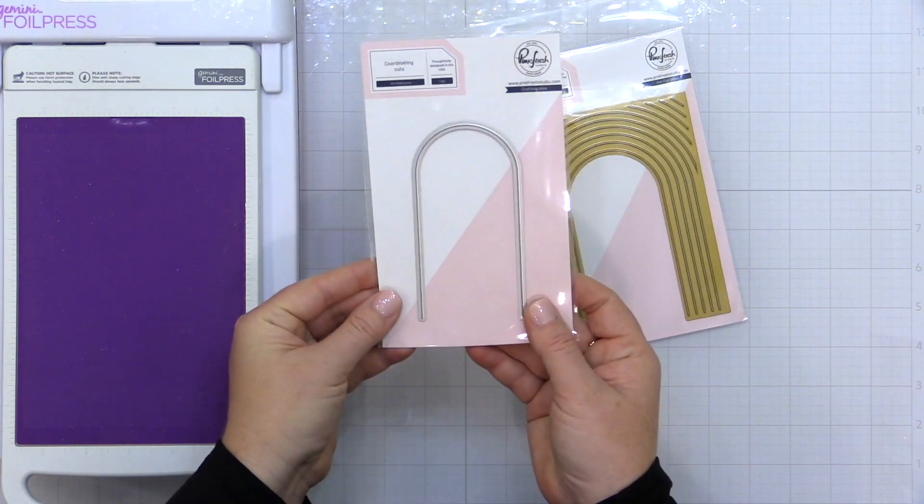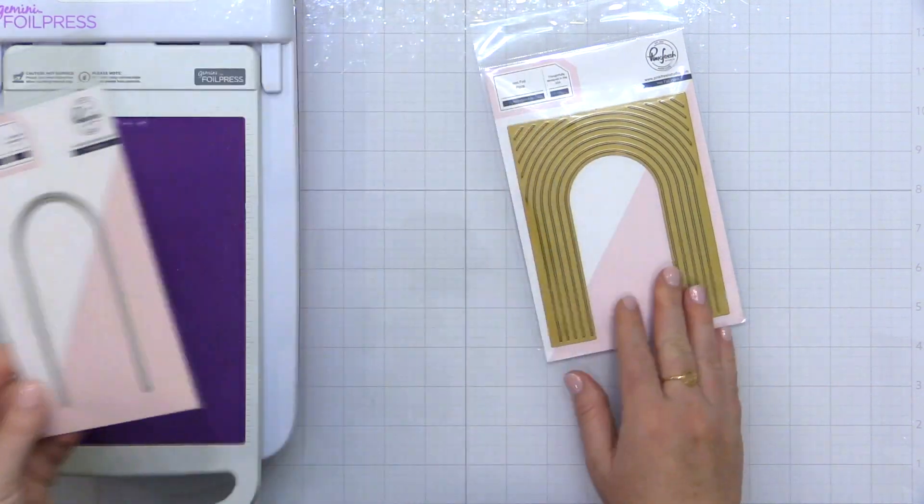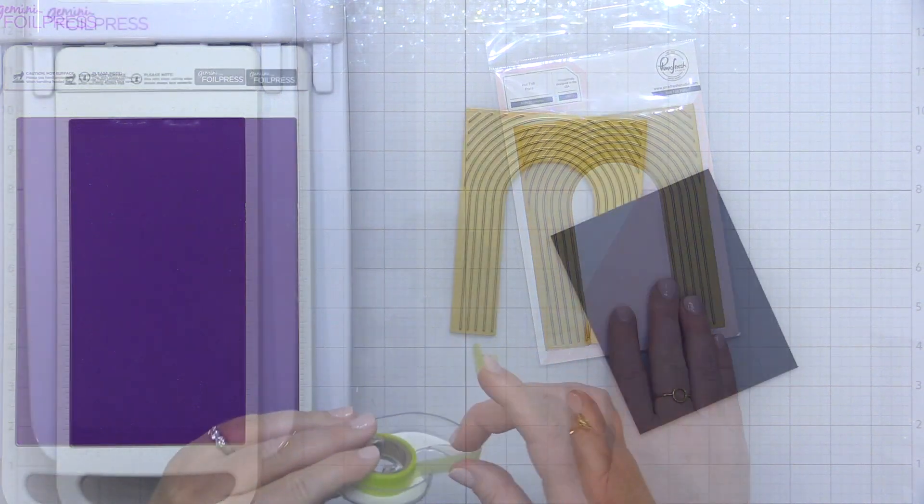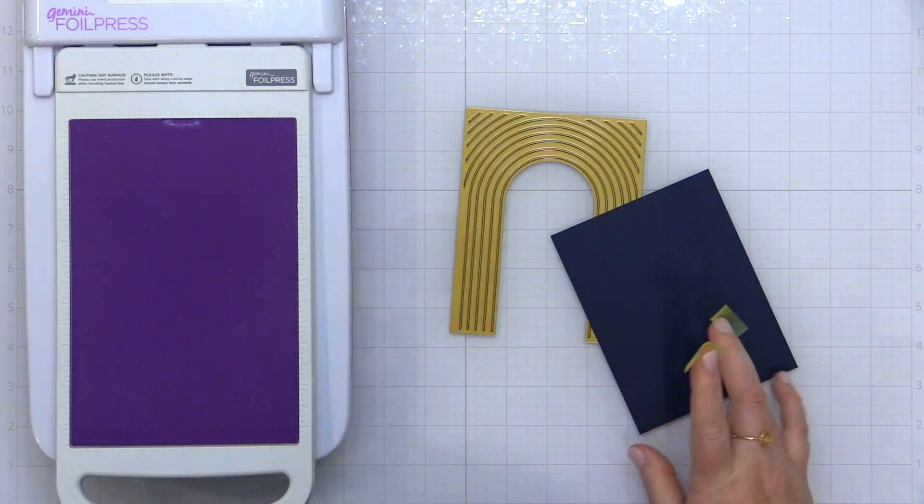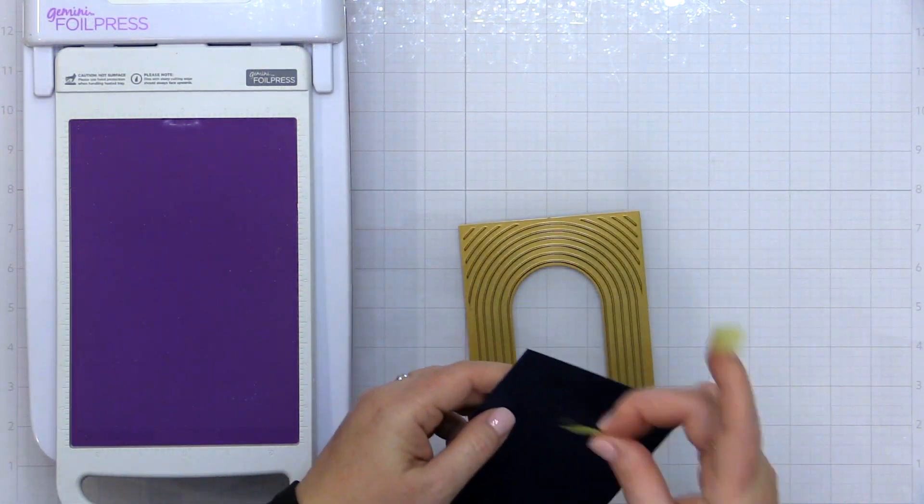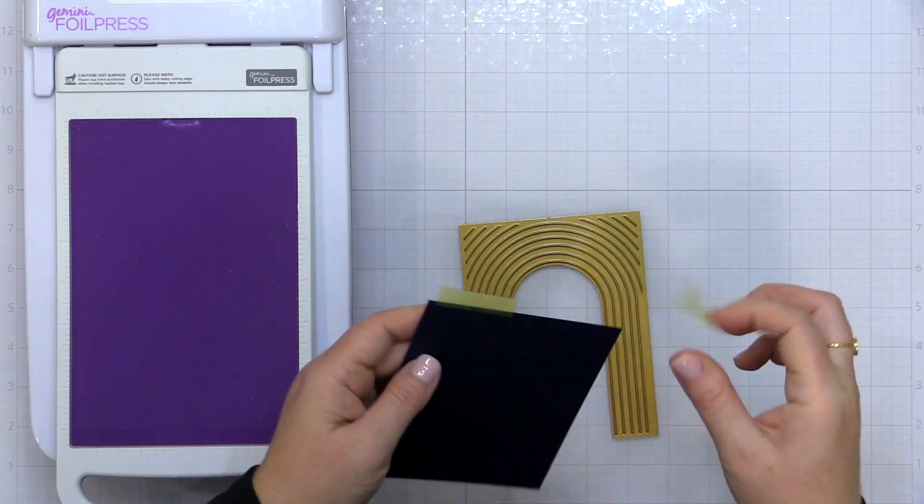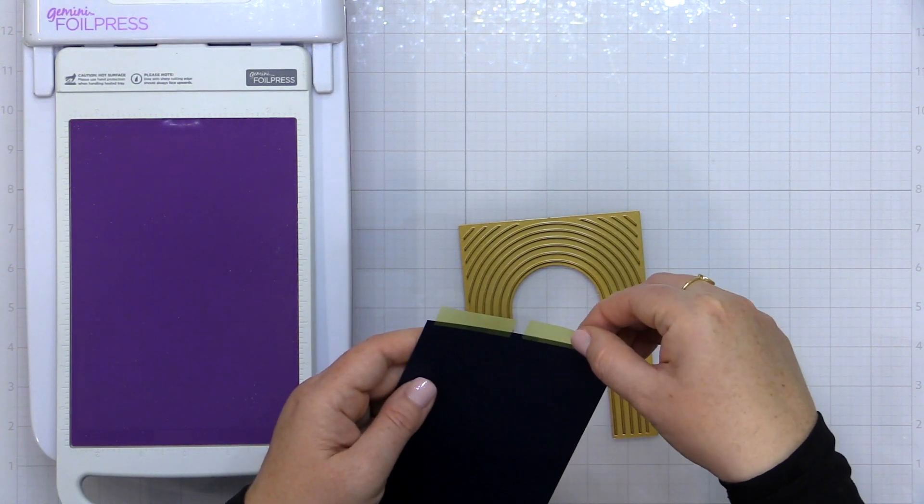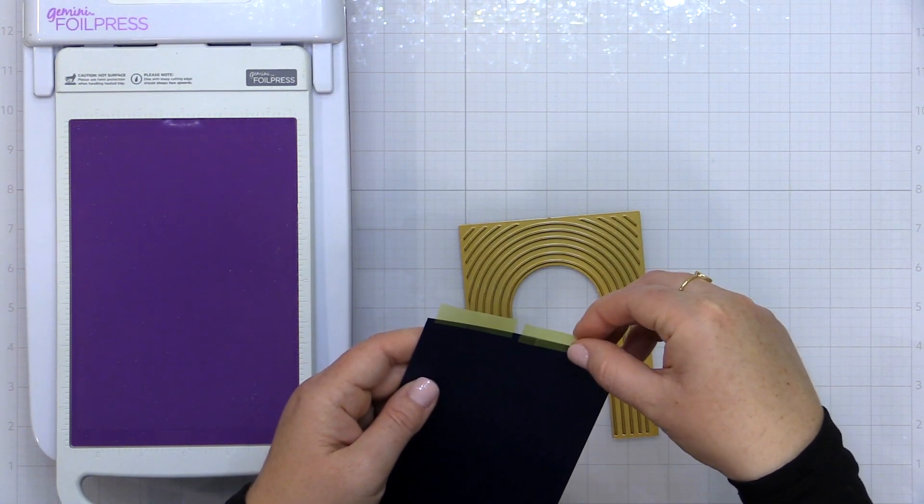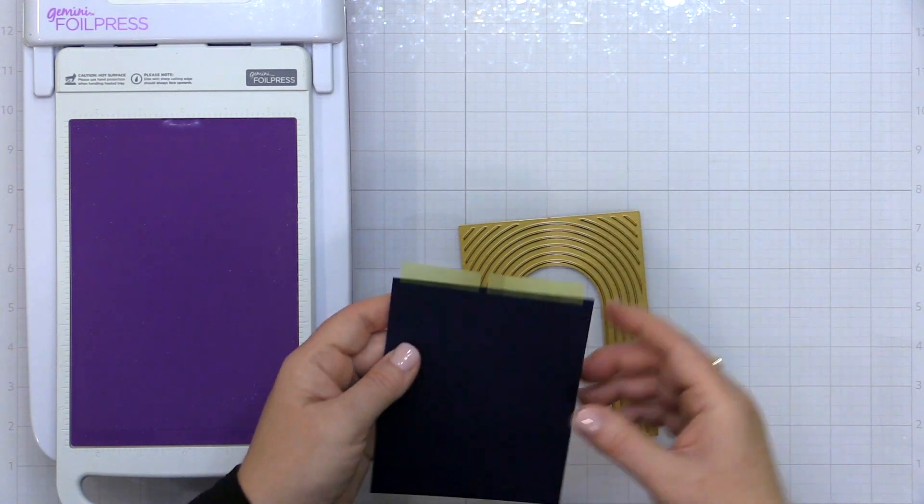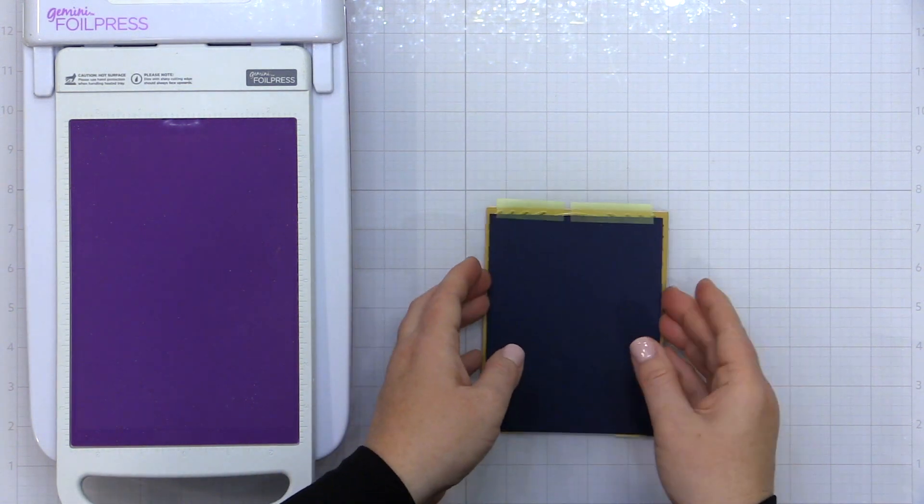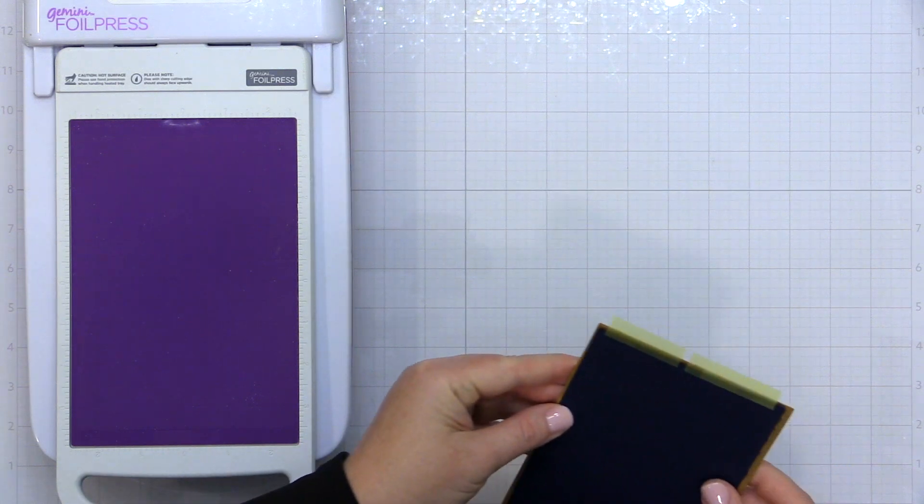I wanted to give you a couple tips for using this because it can be a little tricky to line some of these things up sometimes. So I'm starting out with some navy cardstock and a little bit of removable or repositionable tape, and I'm placing that along the top of my navy cardstock. I'm going to create a hinge so that I can open and close this like a book.